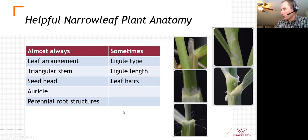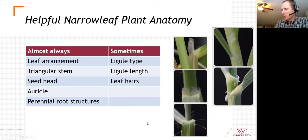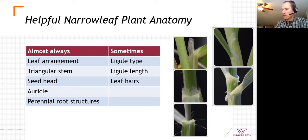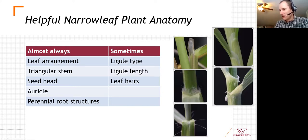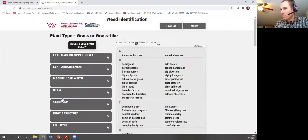Perennial root structures — rhizomes or stolons — are also helpful for grasses. Sometimes helpful is the ligule, located where the leaf meets the stem: it can be membranous, hairy, or absent. Plant height and hairiness can help but are tough to assess without a hand lens or dissecting microscope. Having a seed head is generally preferable to relying on these finer features. The Virginia Tech and University of Missouri apps work similarly for grasses.